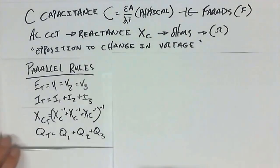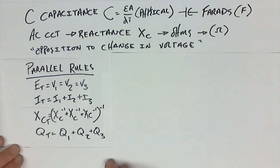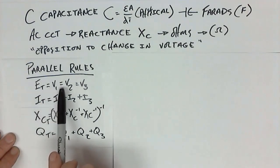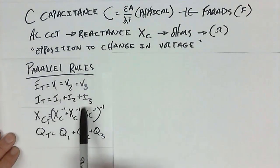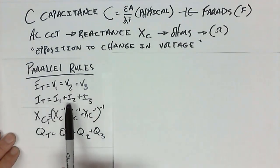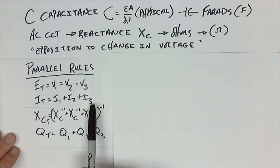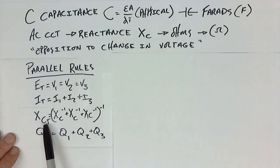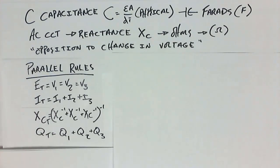In a parallel circuit, voltages are the same, the current value is all of them added together, and we're now calculating ohms of capacitive reactance. Q total is my VARs of capacitive reactive energy.